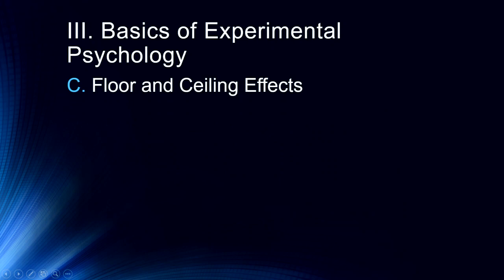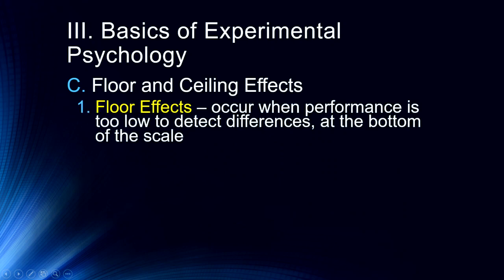A couple of other issues with how we design an experiment. The first is what we call a floor effect — when performance is too low to detect differences, meaning performance is at the bottom of the scale. We've made our task too difficult, and participants are simply unable to perform well enough for us to detect any differences. We want to watch out for this kind of floor effect because if performance is so poor that we're not able to distinguish between conditions, that's not telling us anything. It means we probably have a task that's just too difficult.